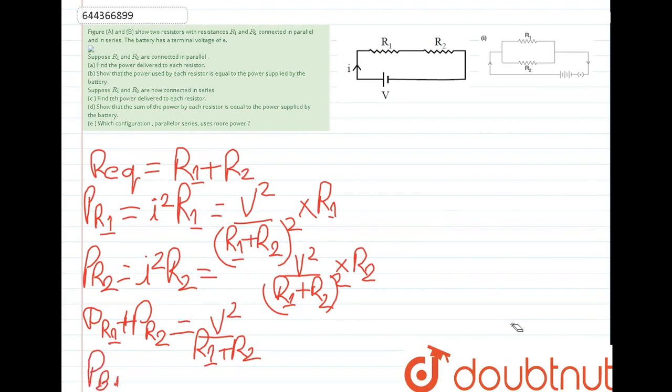Now P of battery is how much? P of battery is V square by R1 plus R2. We are getting V square by R1 plus R2. That is the power given by battery. We can see that these two are coming as equal. Here we have solved the second condition also.